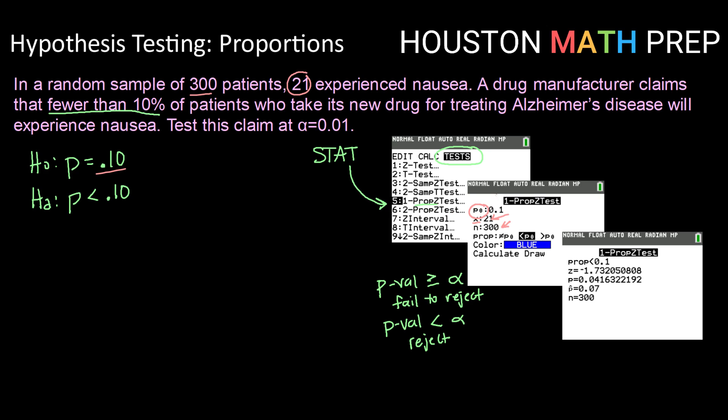And then we need to tell the calculator, are we running a one-sided or two-sided test? So we're going to look at our alternative hypothesis. Since we are running p less than a value, we're going to grab the less than here and toggle down to calculate and hit enter.